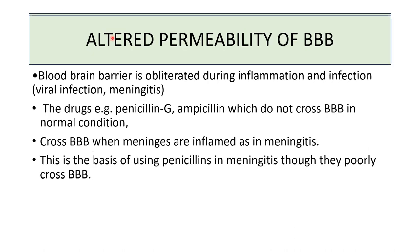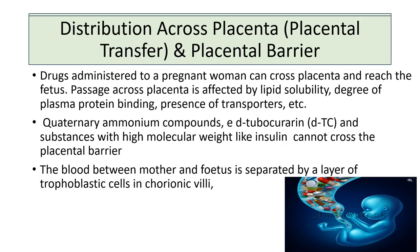Altered permeability of the blood-brain barrier: the blood-brain barrier is disrupted during inflammation and infection, such as viral infection and meningitis. Drugs like penicillin G and ampicillin do not cross the blood-brain barrier under normal conditions, but when the meninges are inflamed, these drugs can penetrate the barrier and reach the inflamed site.